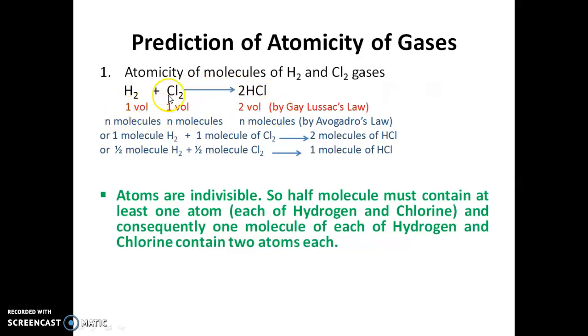you have one volume of hydrogen reacts with one volume of chlorine to give two volumes of hydrogen chloride. So, here you are having N molecules of hydrogen reacts with N molecules of chlorine gives you 2N molecules of HCl. One volume, one volume, two volumes. N molecules, N molecules and 2N molecules.